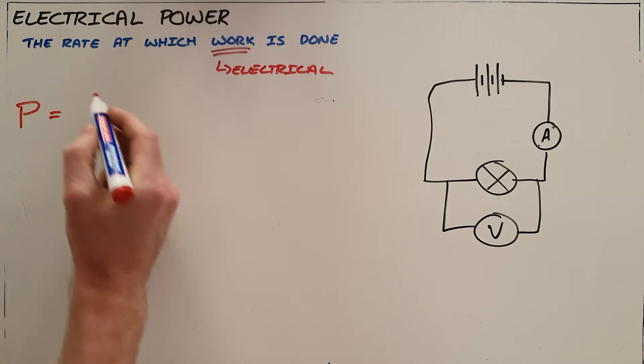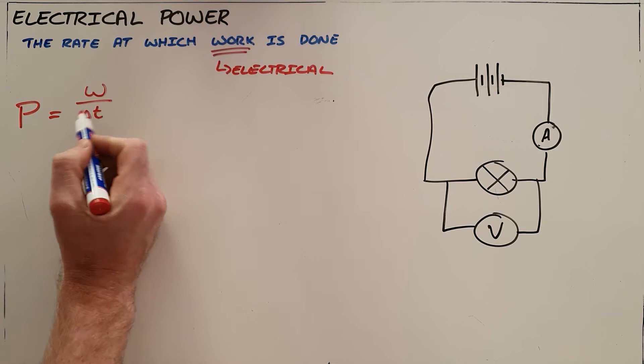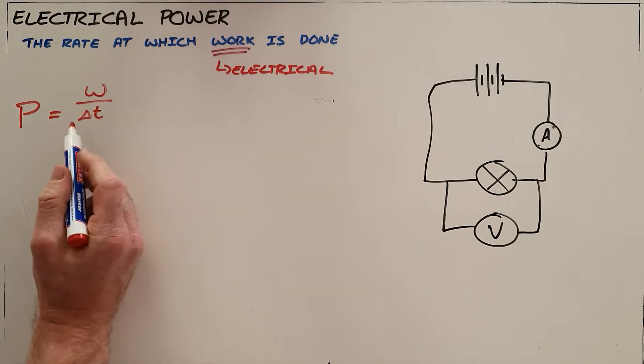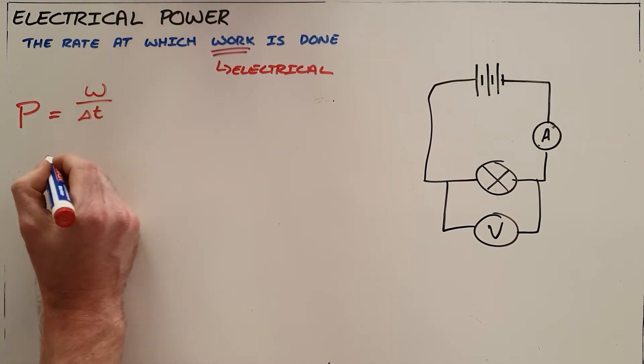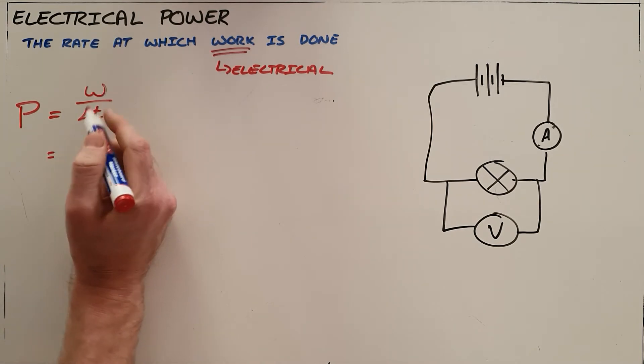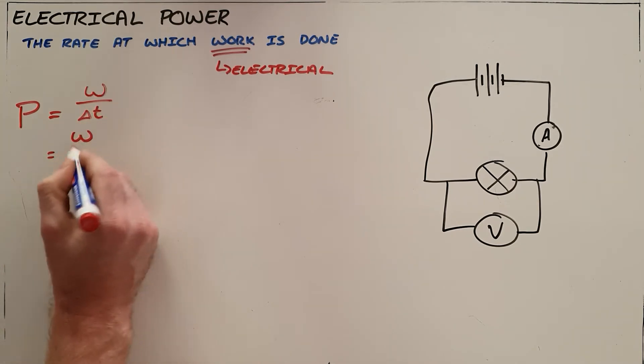From the definition of power being the rate at which work is done, we know that whenever there is a rate it is always just that substance over time. So in this case it is work per unit time.